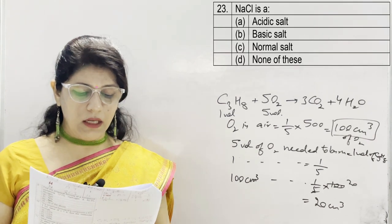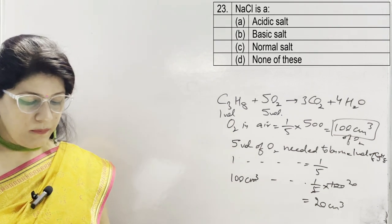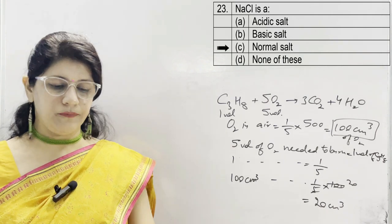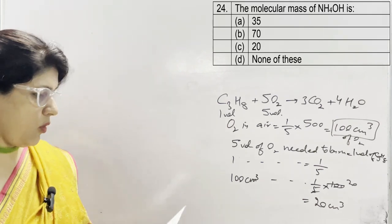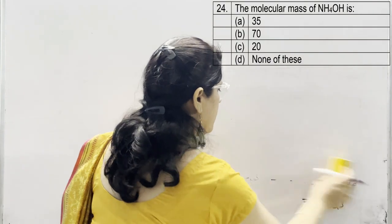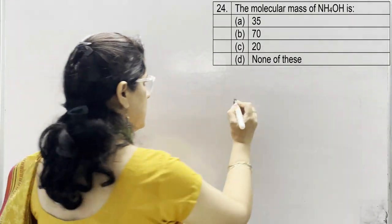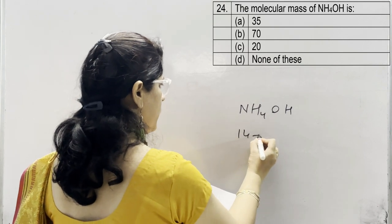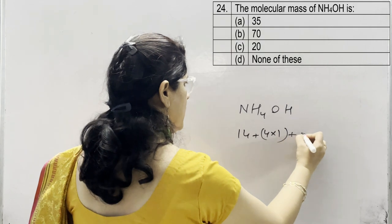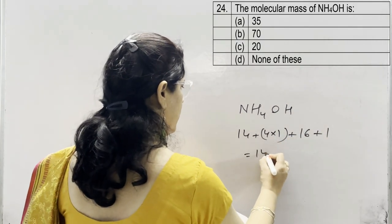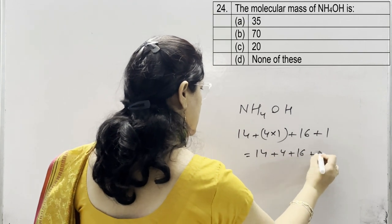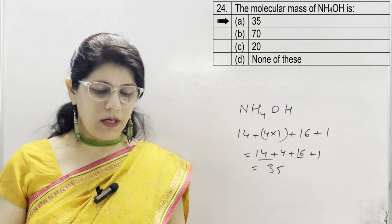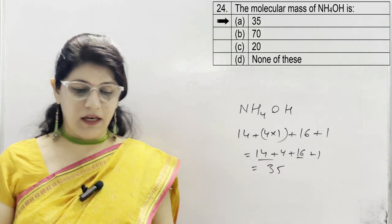In question 23, NaCl is: A acidic salt, B basic salt, C normal salt, D none. Correct answer is C — it is a normal salt. In question 24, the molecular mass of NH₄OH: nitrogen 14, hydrogen 4×1 = 4, oxygen 16, hydrogen 1. So 14 + 4 + 16 + 1 = 35. Options: A 35, B 70, C 20, D none. Option A, 35 amu, is correct.